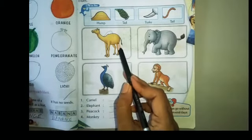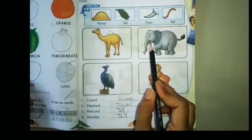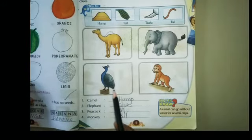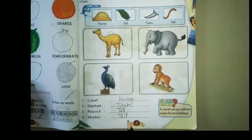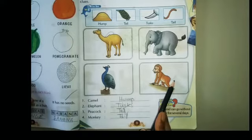Hump is missing from the camel. Tail is missing from this elephant. Tail is missing from this peacock. And tail is missing from this monkey.